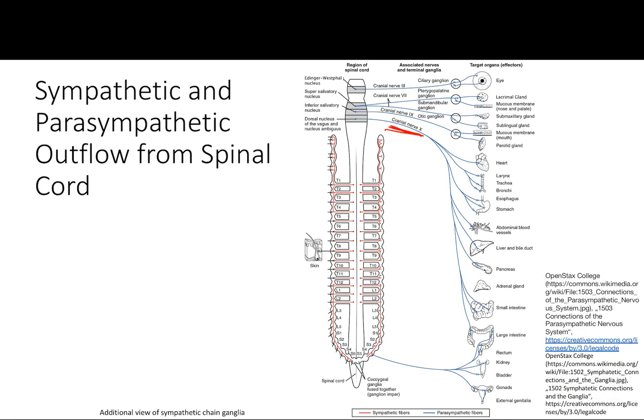This picture shows us how important cranial nerve 10 is for parasympathetic innervation. We also have some parasympathetic innervation from the lower part of the spinal cord, around the S3 and S4 region, which hits the kidneys, bladder, and gonads.